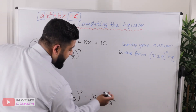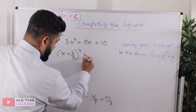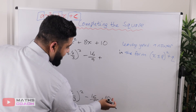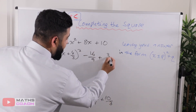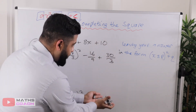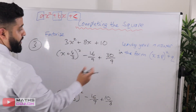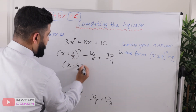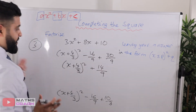I want a denominator of 9, so I multiply both top and bottom of 10 over 3 by 3, giving 30 over 9 — which still equals 10 over 3, so the value hasn't changed. Now I can add them together: minus 16 plus 30 is plus 14, so the result is x plus 4 over 3 squared plus 14 over 9.